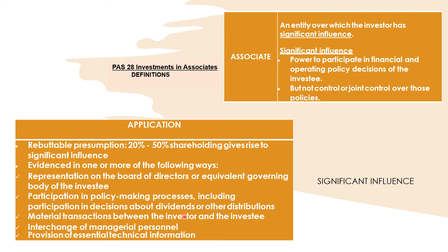Regarding policymaking participation: companies, especially during the pandemic, are deciding whether to pay dividends or not considering cash liquidity and financial position amid economic downturns brought by COVID. If the investor has participation in those policymaking processes, that is an indicator of significant influence. Another indicator is material transactions between the investor and the investee — these may include being part of the value-added supply chain.